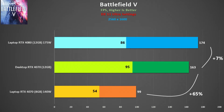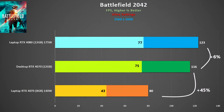I got over 11 games tested at 2560x1600. In Battlefield V, the laptop 4080 was 7% faster than the desktop 4070, which in turn was 65% faster than the laptop 4070. One thing you will see time and time again is that the desktop 4070 does generally have a higher 1% low or minimum frame rate. In Battlefield 2042 the result is much the same, although here the 1% low for the laptop 4080 and the desktop 4070 is about the same.